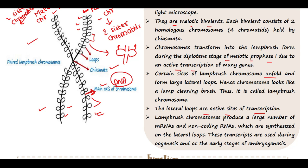These transcripts are used during oogenesis and at the early stages of embryogenesis. In each loop you will find DNA, RNA and protein. During oogenesis many proteins are required. When the egg matures it needs to be fertilized, and after fertilization many proteins are also required for embryogenesis. To make many proteins, many RNAs must be formed first, and for that, gene transcription must occur.